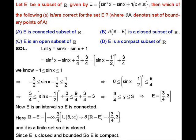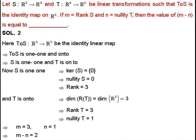Now consider the set R minus E, which equals (-∞, 3/4) union (3, +∞). The boundary points of this set are only 3/4 and 3. The set R minus E has a finite number of boundary points, and every finite set is closed. That is why this set is closed. So options A, B, and D are correct.